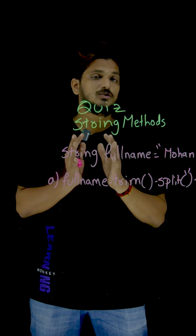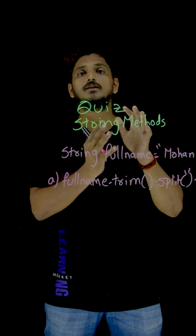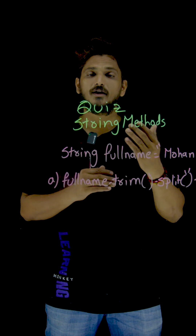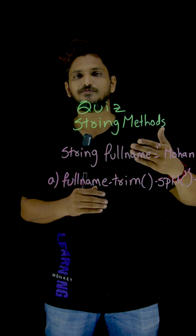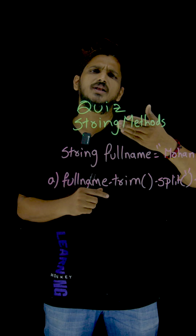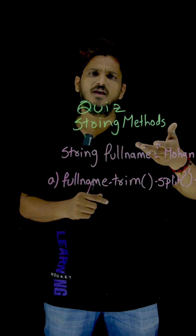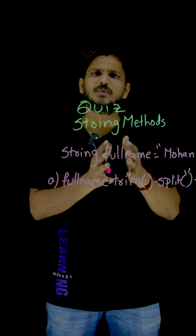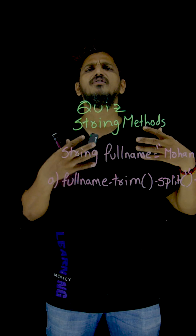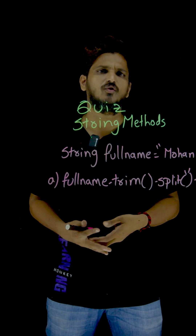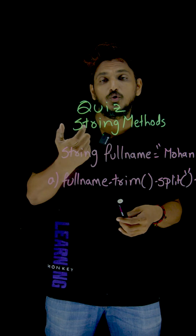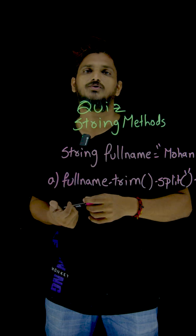Suppose your situation is like this: you are going to collect user data from the front end — the user is going to fill in his details and click submit. User names can be entered in different ways; some users enter spaces in between, some enter spaces at the end. From that user name you have to identify the last name of the user.